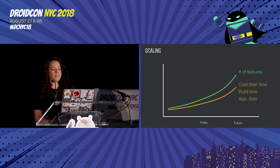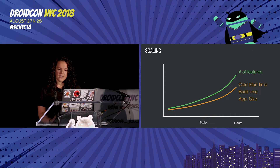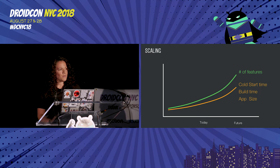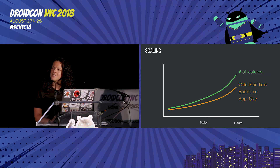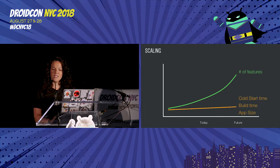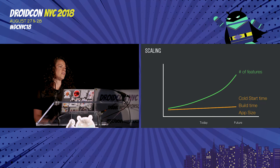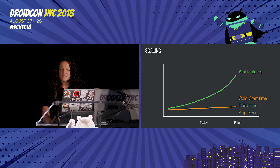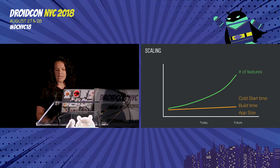To sum up our primary concerns: the scaling challenge we face at Instagram is that as the number of features in our app grows, we risk build times, cold start time, and app size growing at the same rate. It's clearly unsustainable — continuing this way would cause our app to feel unusable on certain devices and would be a pain for our team to develop. Instead, the trend line we'd like to see is: the number of features can grow linearly or even exponentially, but we'd like to keep performance metrics pretty much flat so that we can continue to deliver a performant experience.